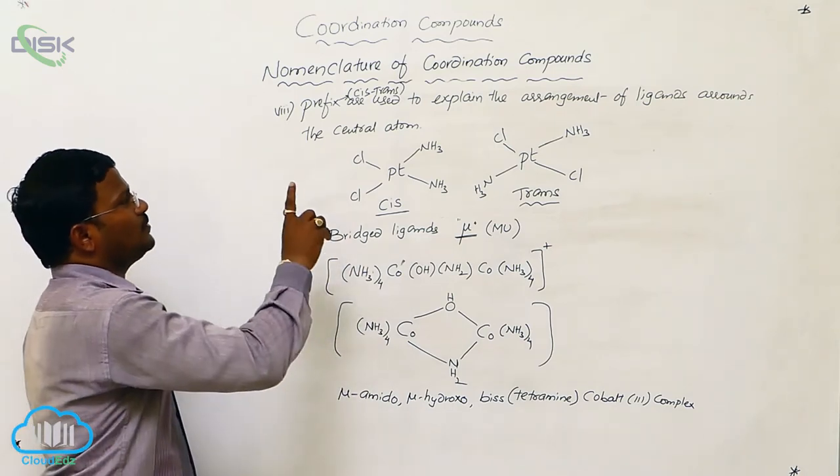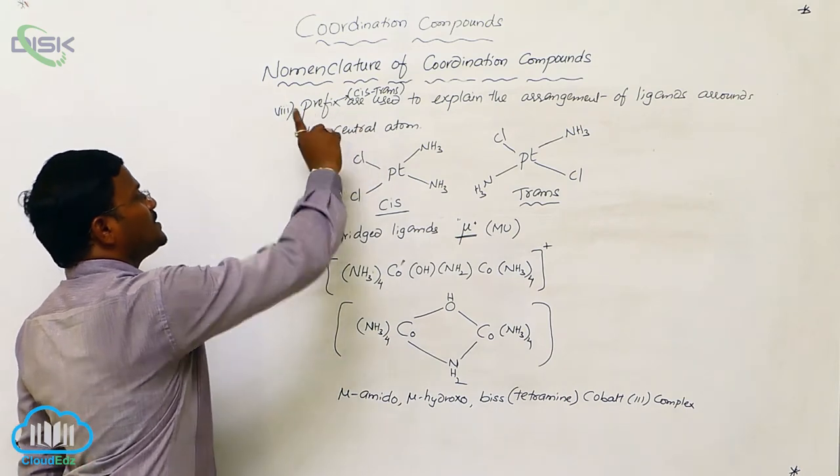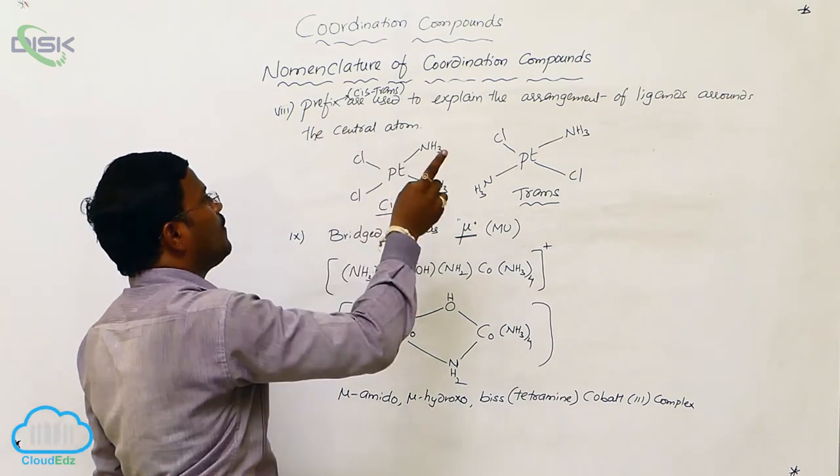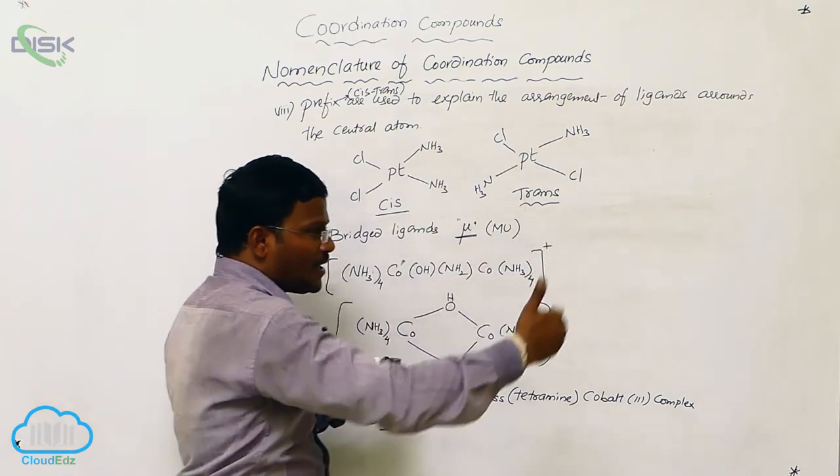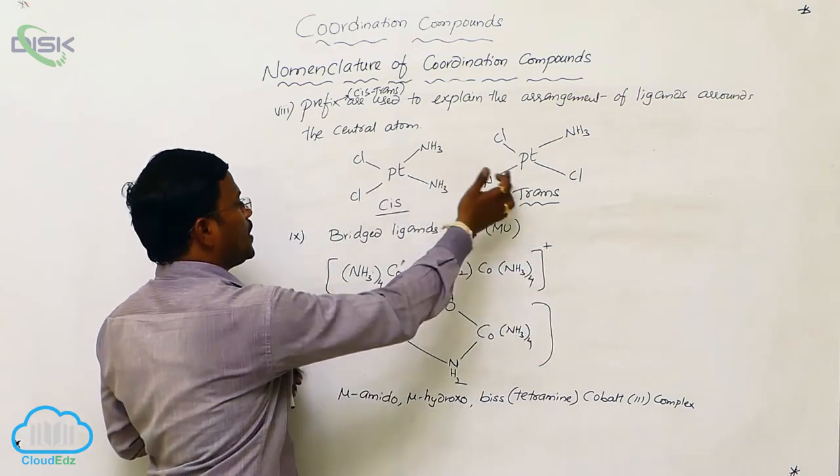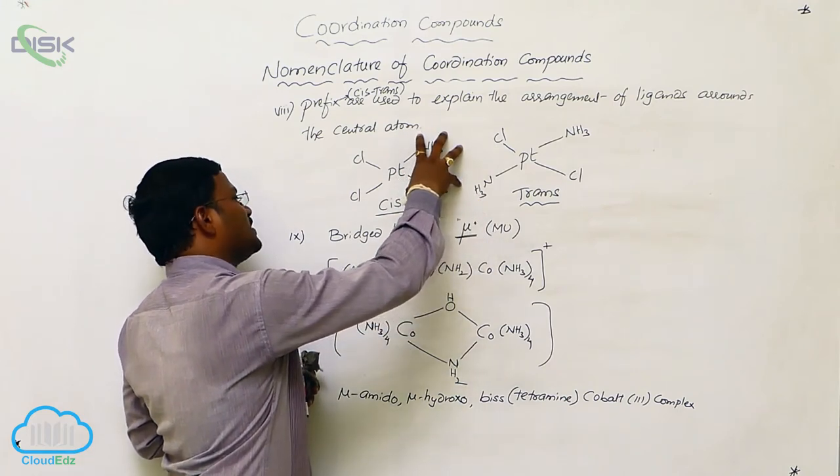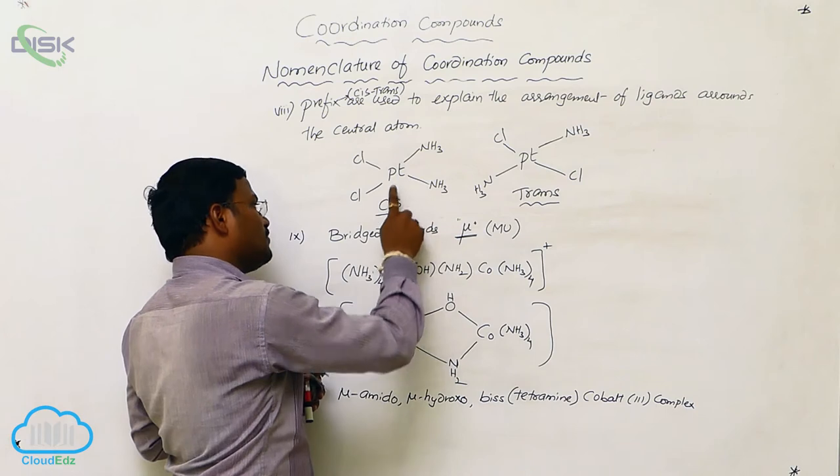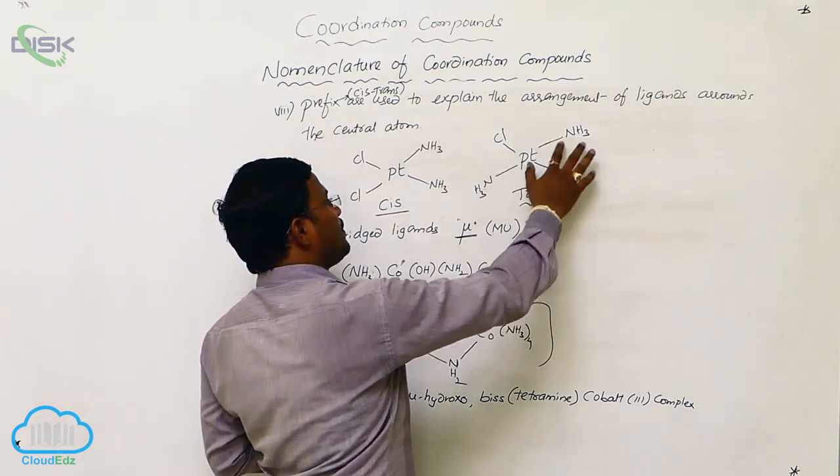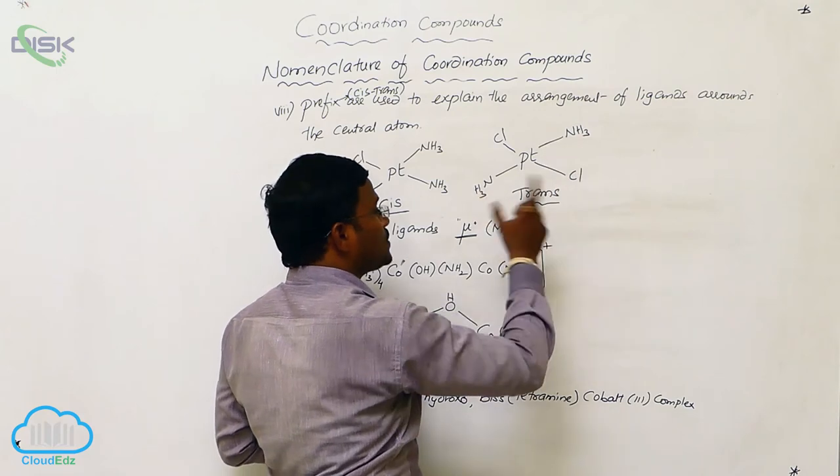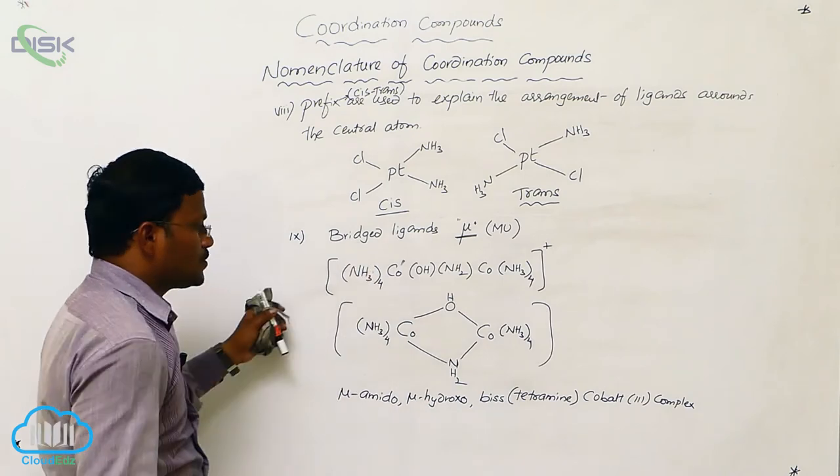Similarly, prefixes are used. Which type of prefixes? Cis and trans type of prefixes are used to explain the spatial arrangement of ligands around the central atom. If the same type of ligands are present on the same side of the central atom, then we have to use cis as the prefix word. If the same type of ligands are present on opposite sides of the central atom, then we have to use trans as the prefix word.